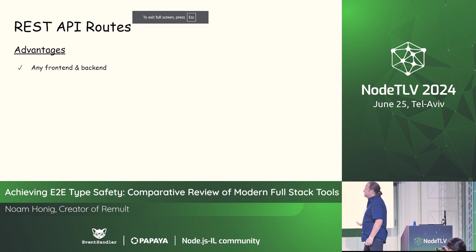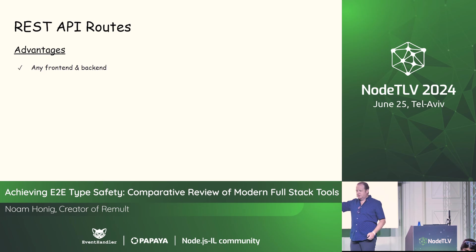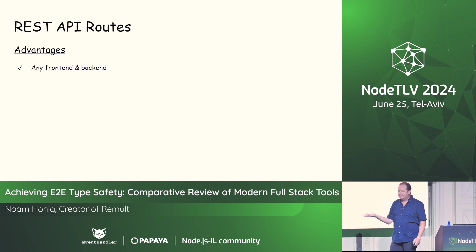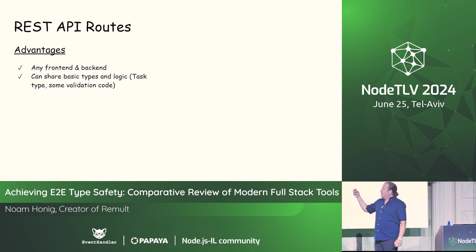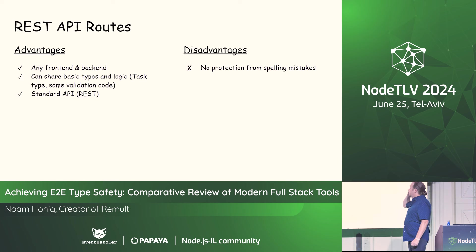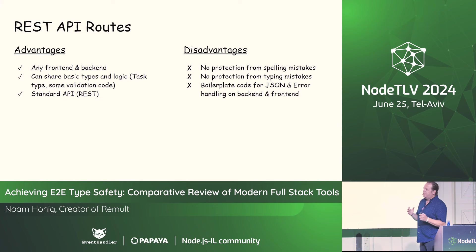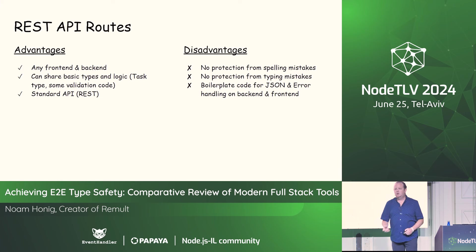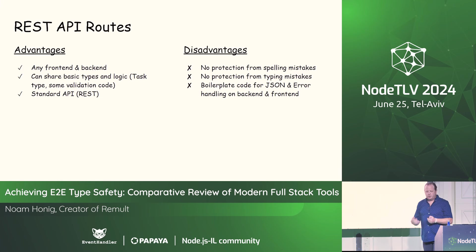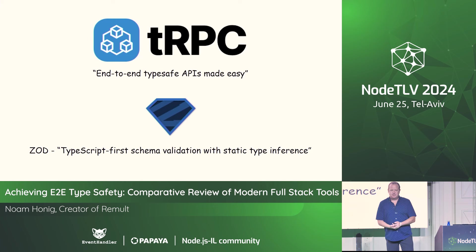So let's review REST API. Advantages: it can work with any front end and any back end — Vue, React, Angular, Solid.js, vanilla JS, Express, Fastify, Next, Nest, and all the other acronyms. We can share basic types and use standard REST API, very useful when you want to expose an API for integrations. Disadvantages: it is not protecting against spelling mistakes — that's a no-go for me. No protection from typing mistakes. A lot of boilerplate JSON code copied with vulnerabilities included. And it doesn't handle non-JSON types well.